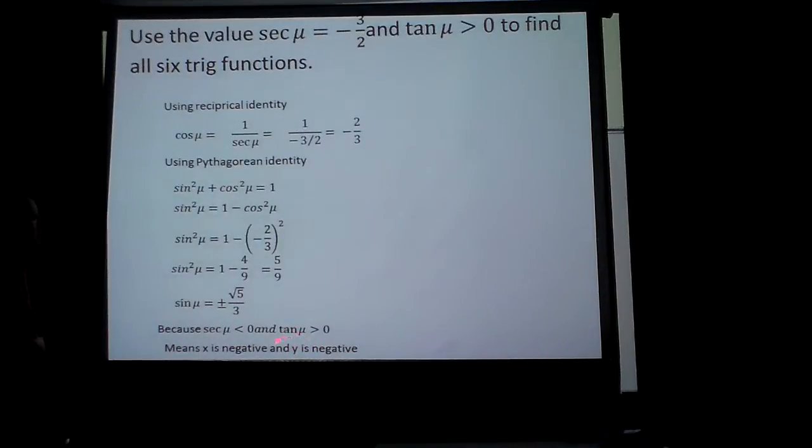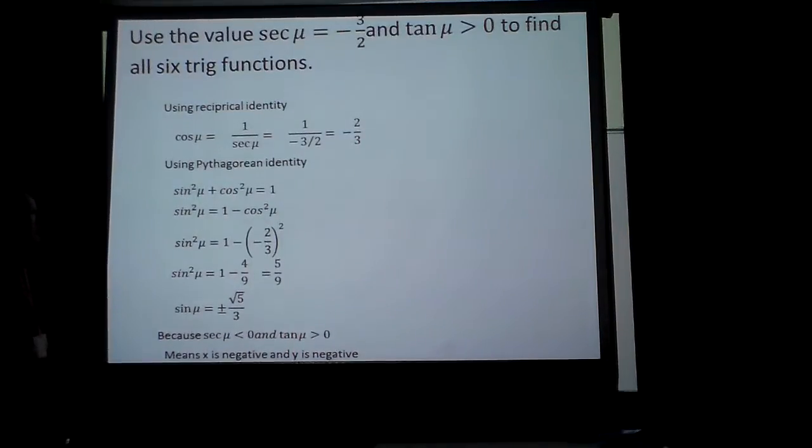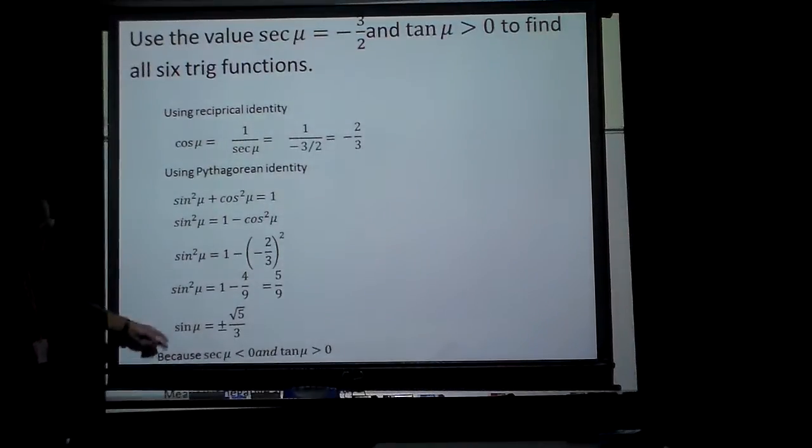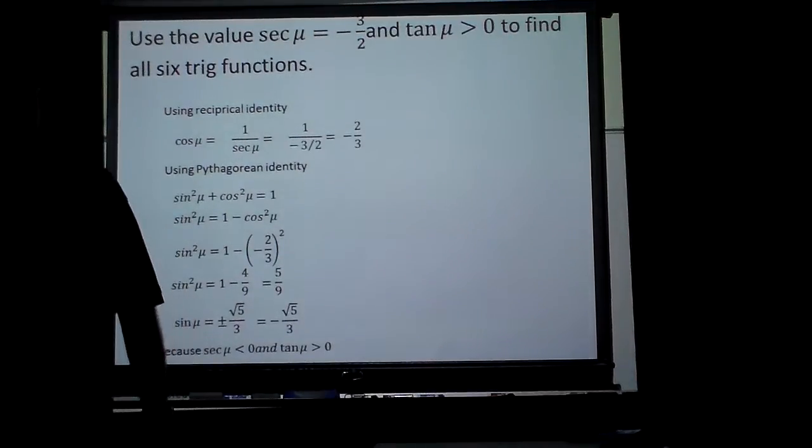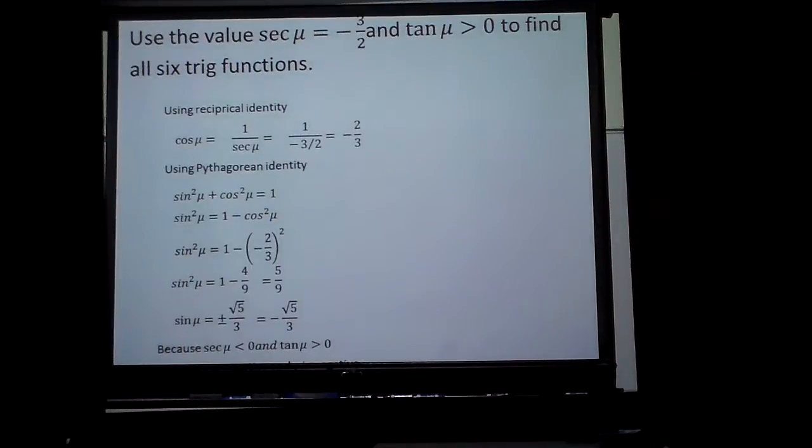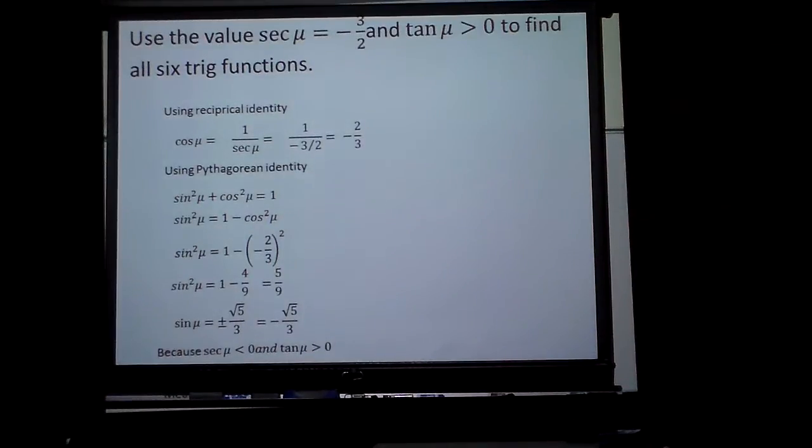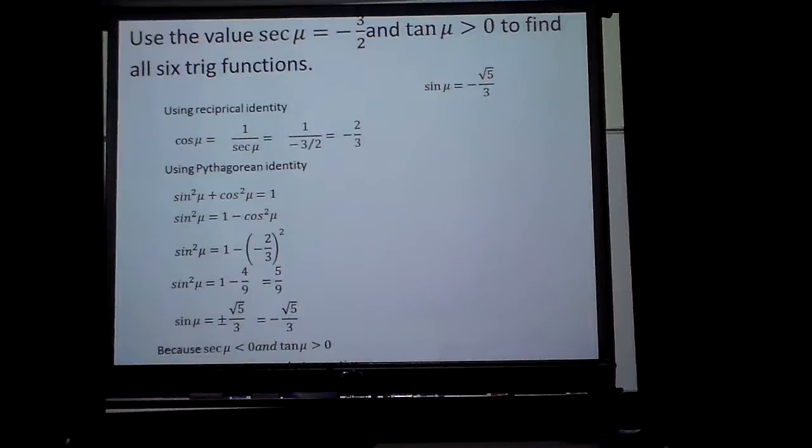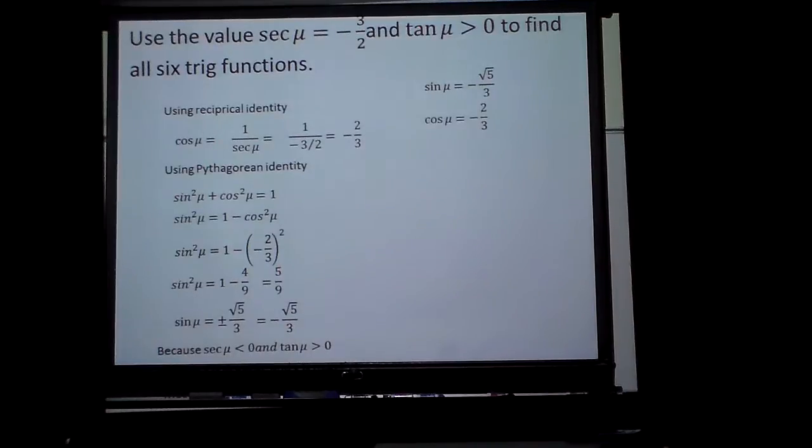If I'm in quadrant 3, then sine has to be negative. So, it's negative square root of 5 over 3. So, I know it's negative. Cosine is that.